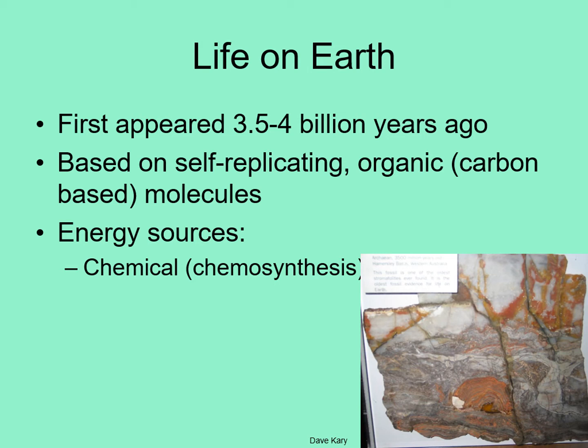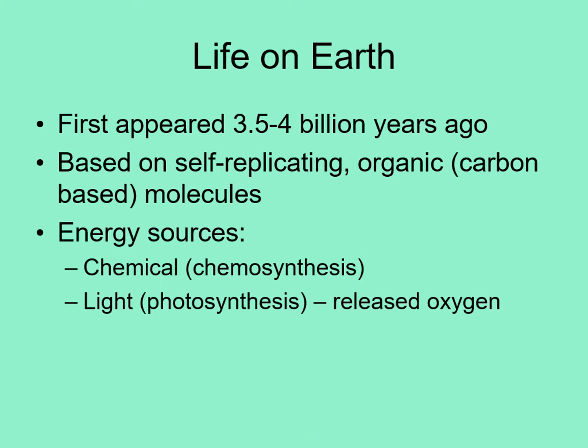Sometime in the early history of life, a new energy source was tapped — the sun. Blue-green algae or some similar organism developed photosynthesis, the ability to convert sunlight into available energy. As a side effect, the Earth's atmosphere began to change, with the abundant carbon dioxide that was in our early atmosphere slowly replaced with oxygen. This is why the Earth is the only planet with a substantial amount of free oxygen in its atmosphere.